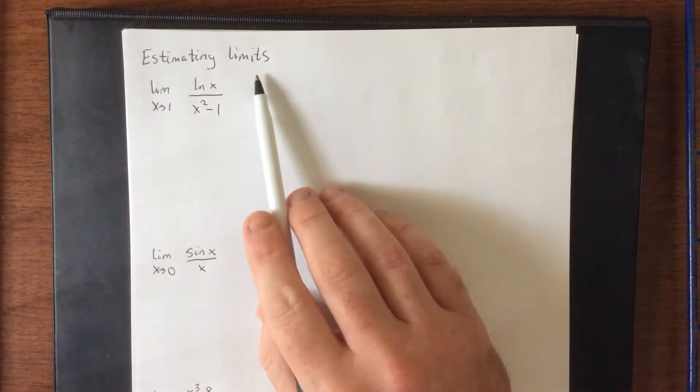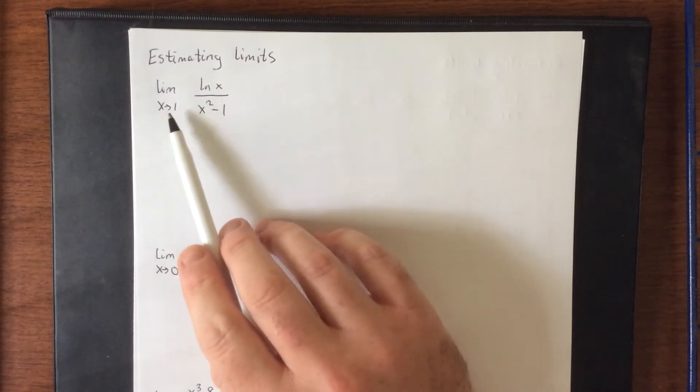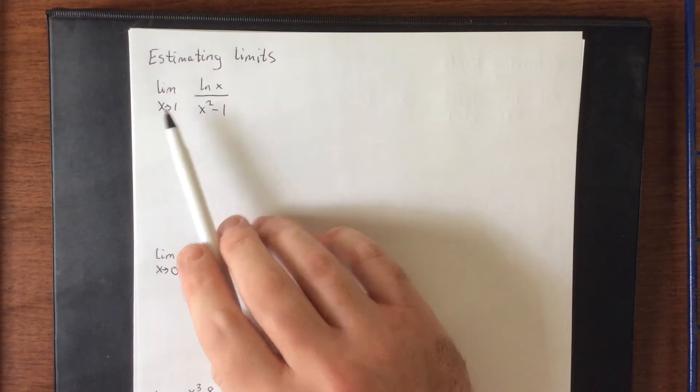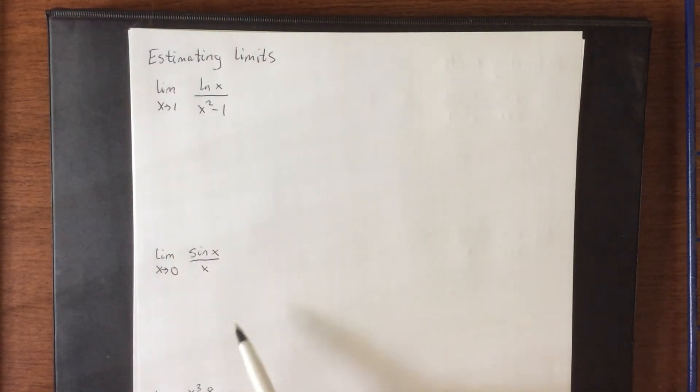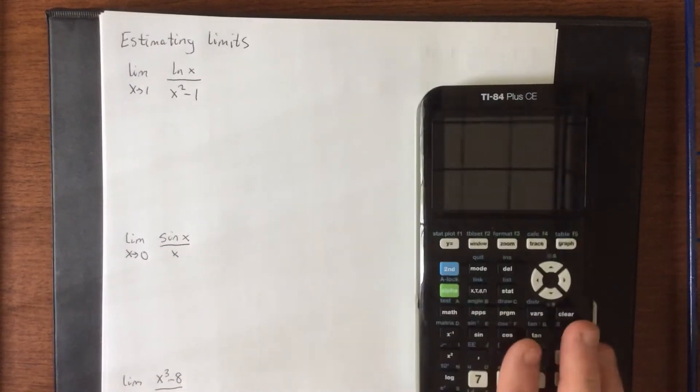So to estimate limits, what we're going to do is, with the use of a graphing calculator or other software, we're going to just plug in multiple values of x that are really close to whatever number we have that x is supposed to be approaching. So if you do have a graphing calculator handy, now would be a great time to make sure that you are ready to go.